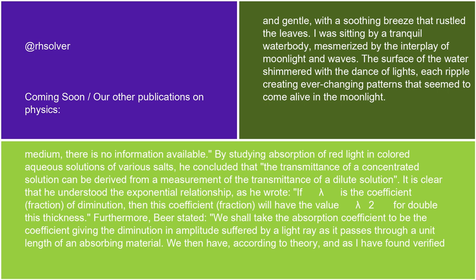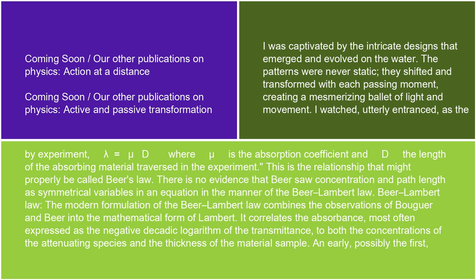Furthermore, Beer stated: 'We shall take the absorption coefficient to be the coefficient giving the diminution in amplitude suffered by a light ray as it passes through a unit length of an absorbing material. We then have, according to theory and as I have found verified by experiment: λ = μd, where μ is the absorption coefficient and d the length of the absorbing material traversed in the experiment.' This is the relationship that might properly be called Beer's Law.